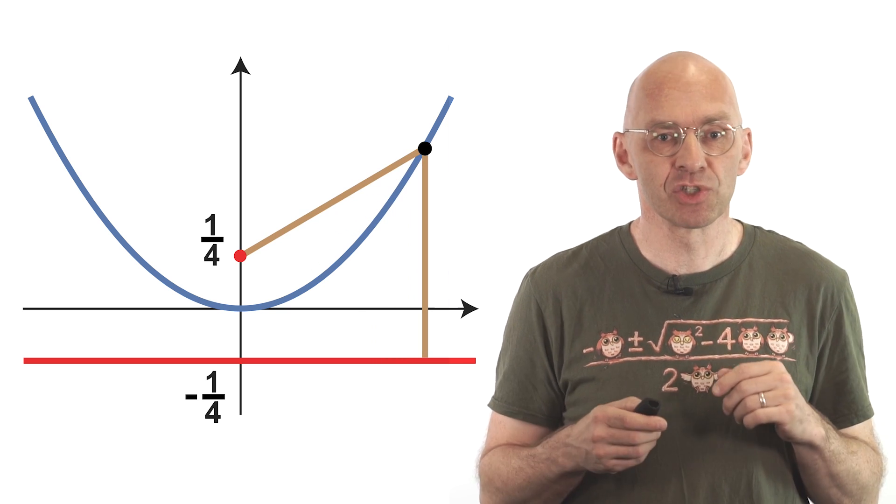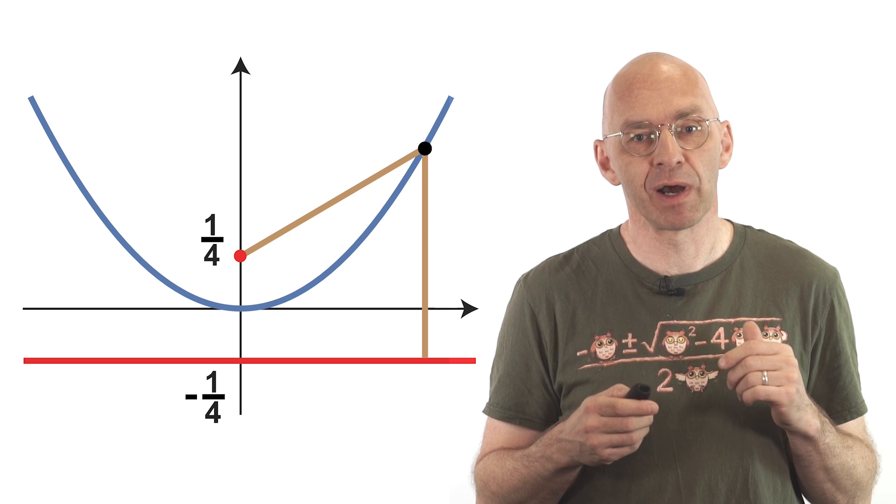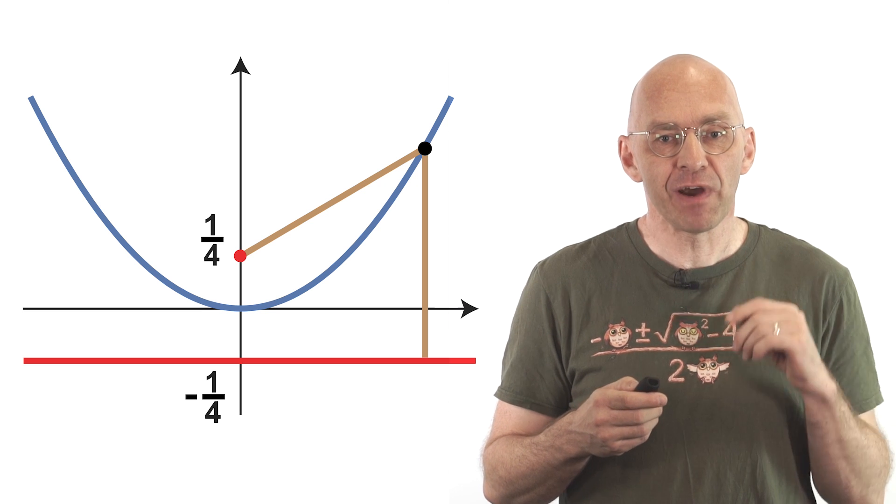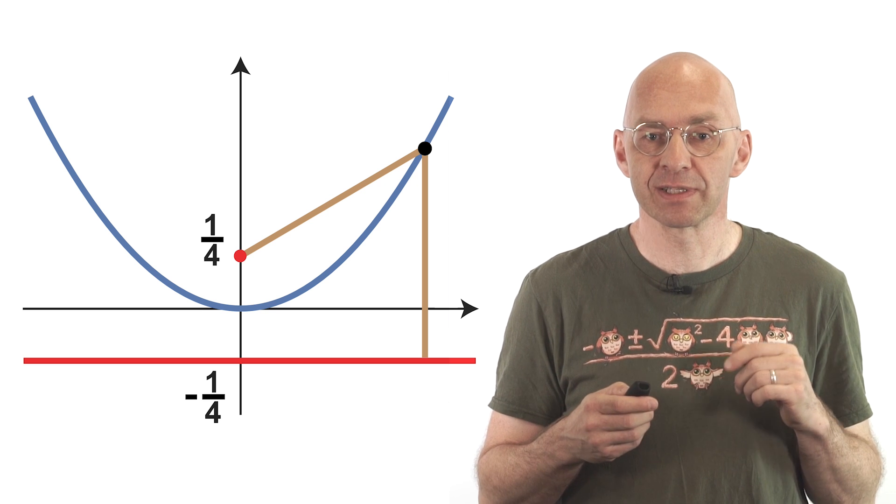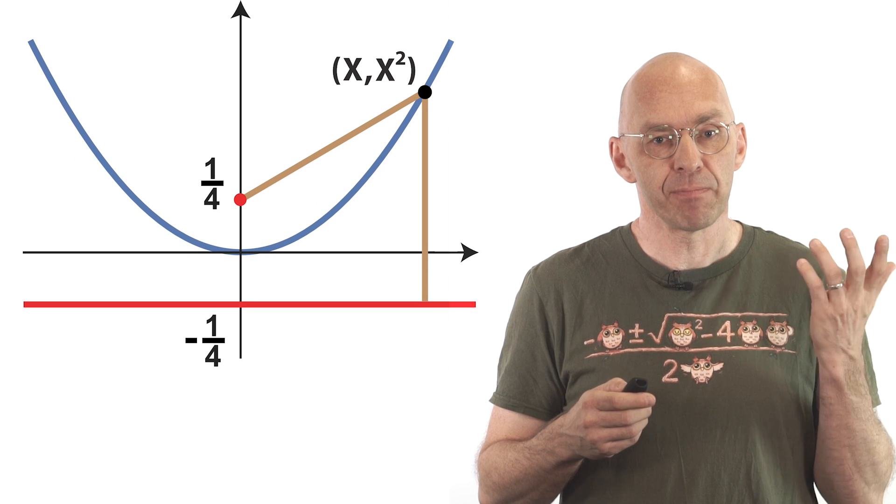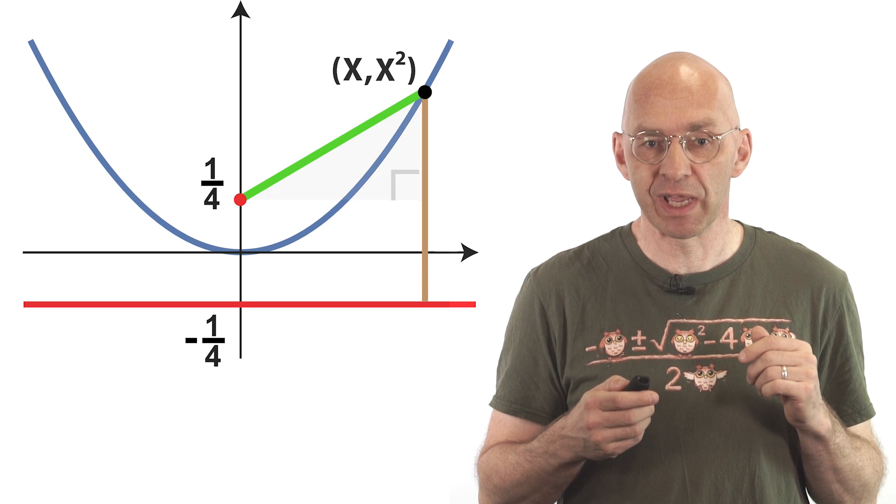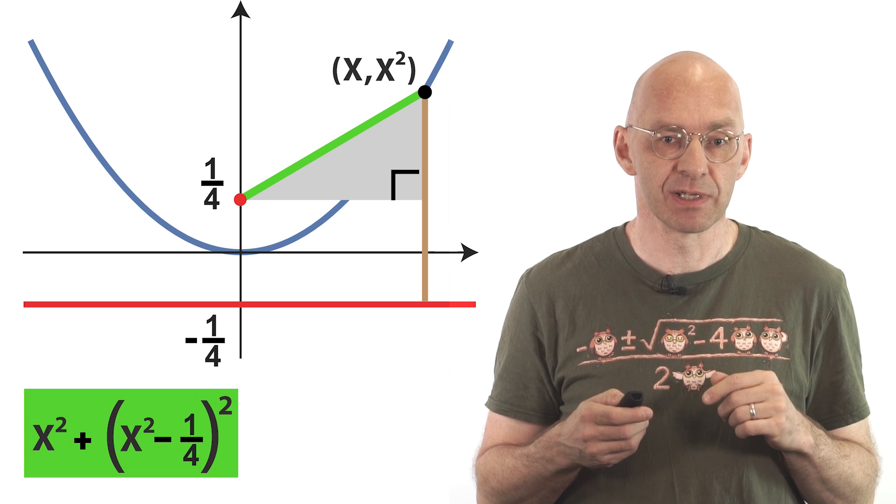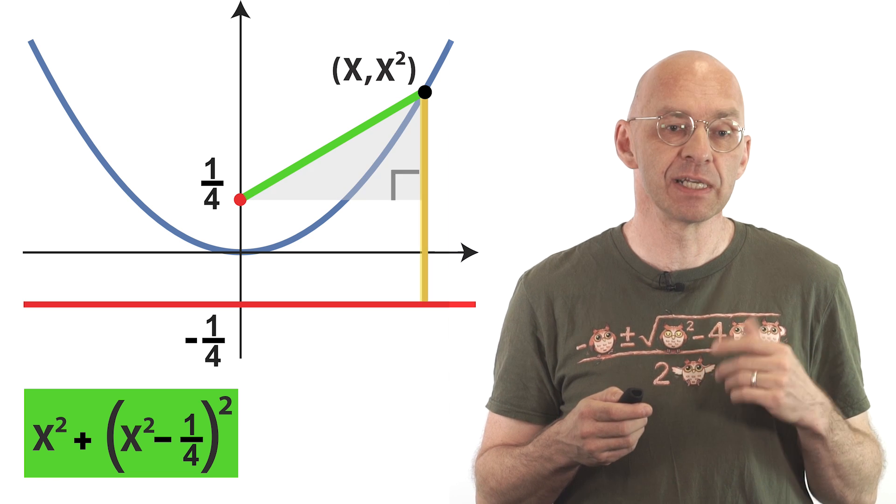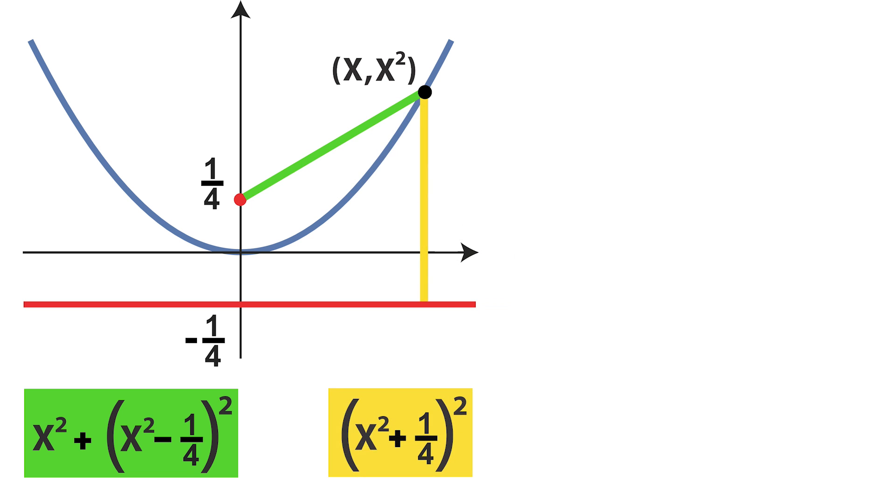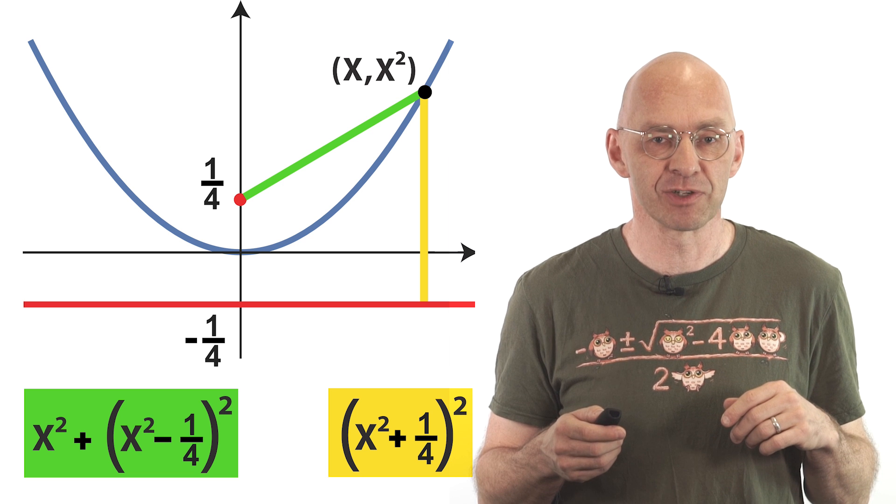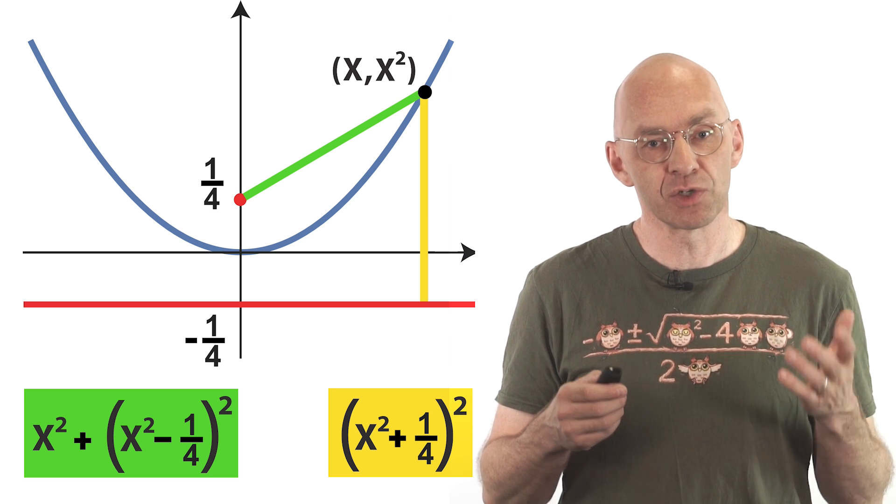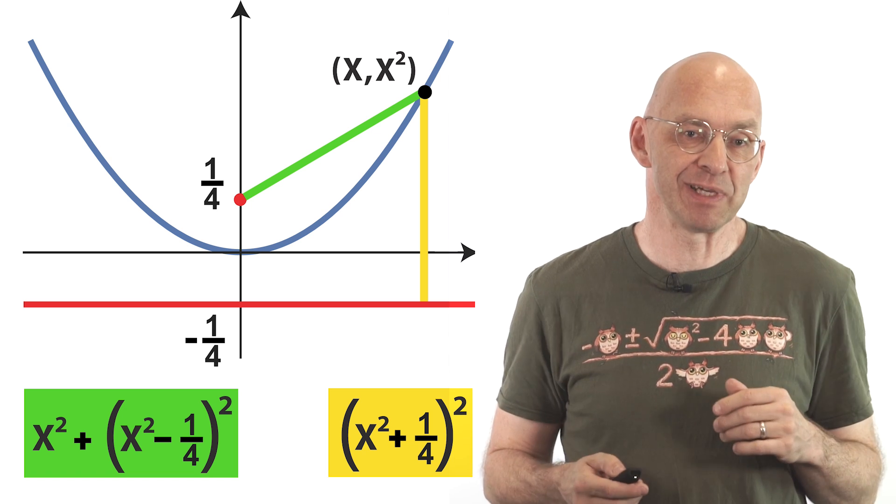That looks tricky but to show it we just need help from our other school friend Mr. Pythagoras. Here we go. If our parabola point has coordinates x and x squared then Pythagoras tells us the square of this green distance. And going straight down to the directrix the square of the yellow distance is this. Now it's just a matter of going on algebra autopilot to check that these two expressions are equal. And that shows the two distances are the same. Easy peasy.